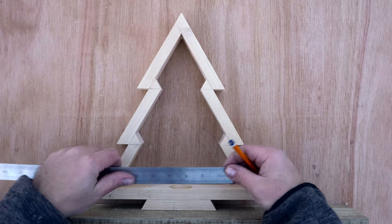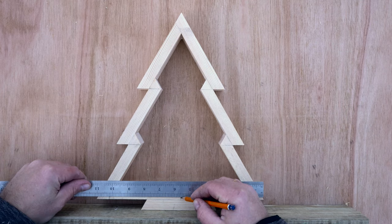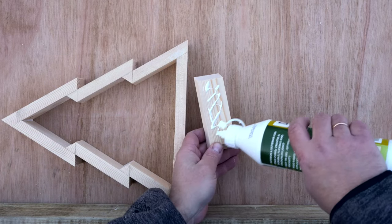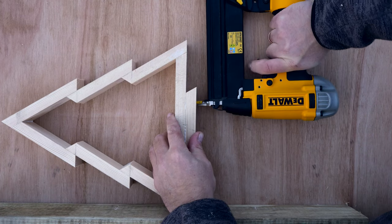I am marking position for the very last part of this Christmas tree. Align it with the center of bottom part. Use wood glue and brad nails to fix it in place.